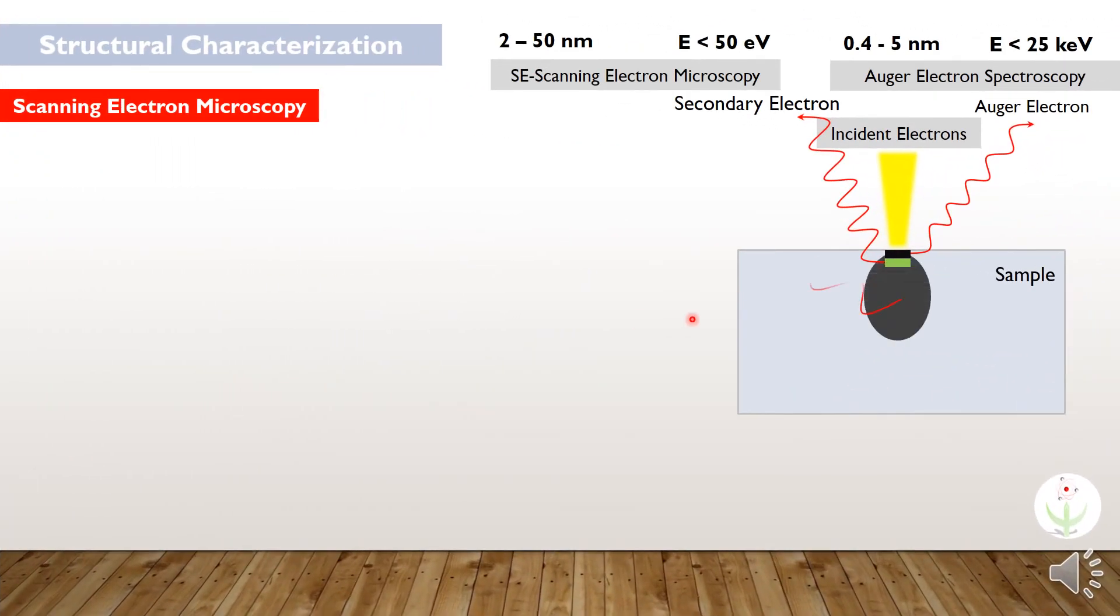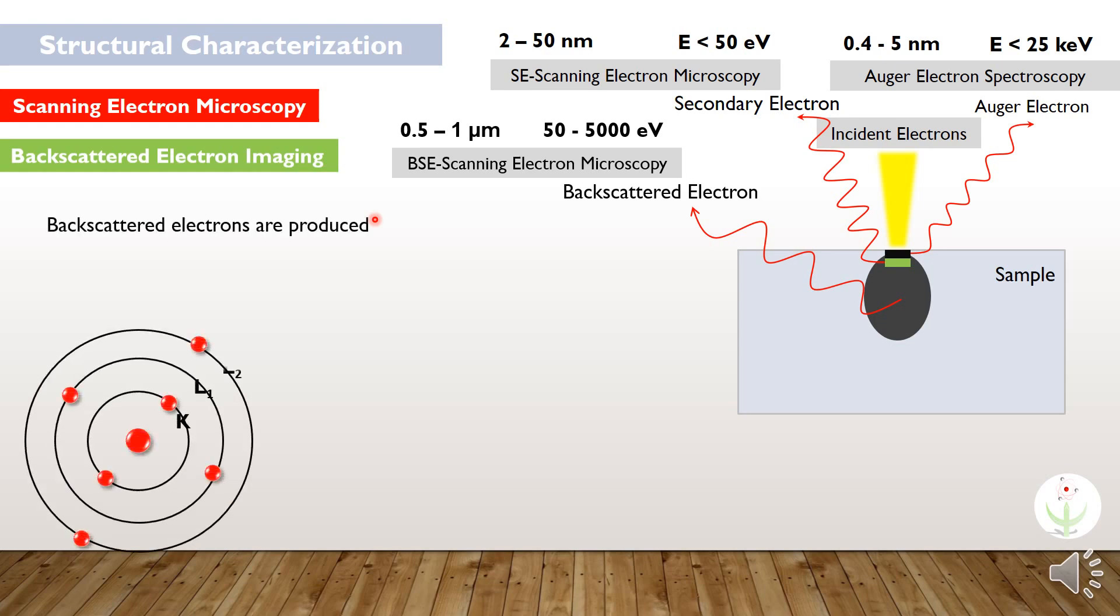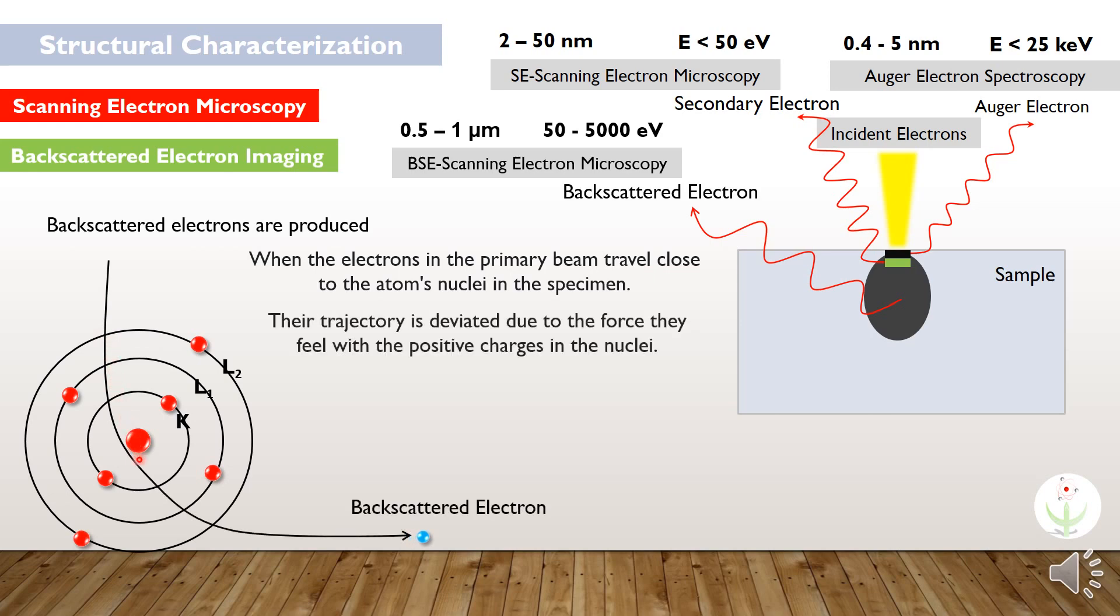Backscattered electrons are produced from a depth of 0.5 to 1 micrometer having 50 to 5000 electron volts of energy. These backscattered electrons are also used in scanning electron microscopy to produce compositional contrast.